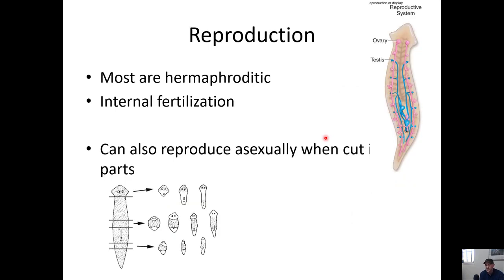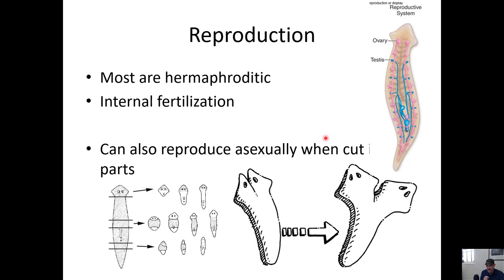This group is mostly hermaphroditic, meaning they have both male and female reproductive structures, and they have some form of internal fertilization. They're also excellent at asexual reproduction - if you cut them in half they'll develop into two new worms, and even if you cut them between the eyes they'll grow two heads. They're really good at regeneration.